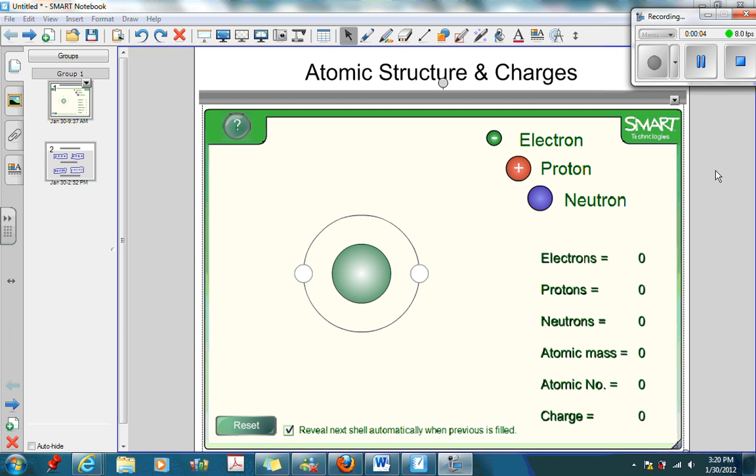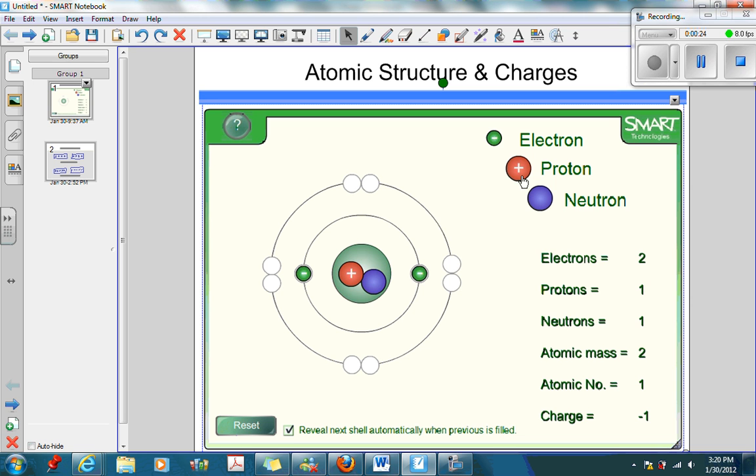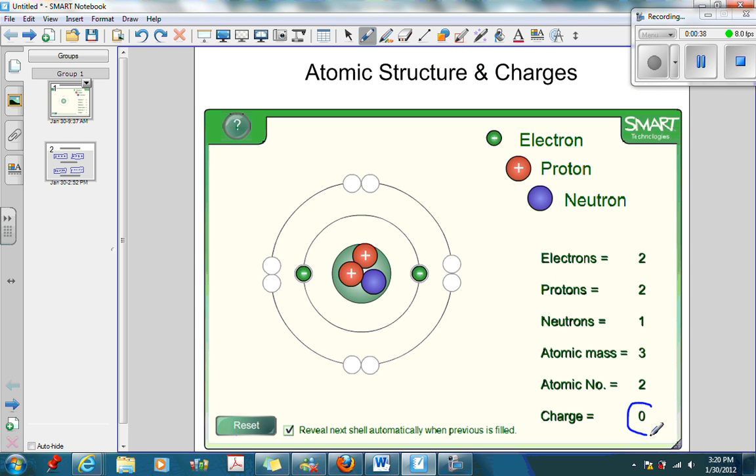Atomic structure and charges. You would have studied about atomic structure in earlier grades. An atom consists of a nucleus which houses the protons and neutrons, and is surrounded by electrons in orbits. If you closely observe the atom, you will see they have equal numbers of protons and electrons. An atom is electrically neutral, that's why you're seeing a charge of zero here.